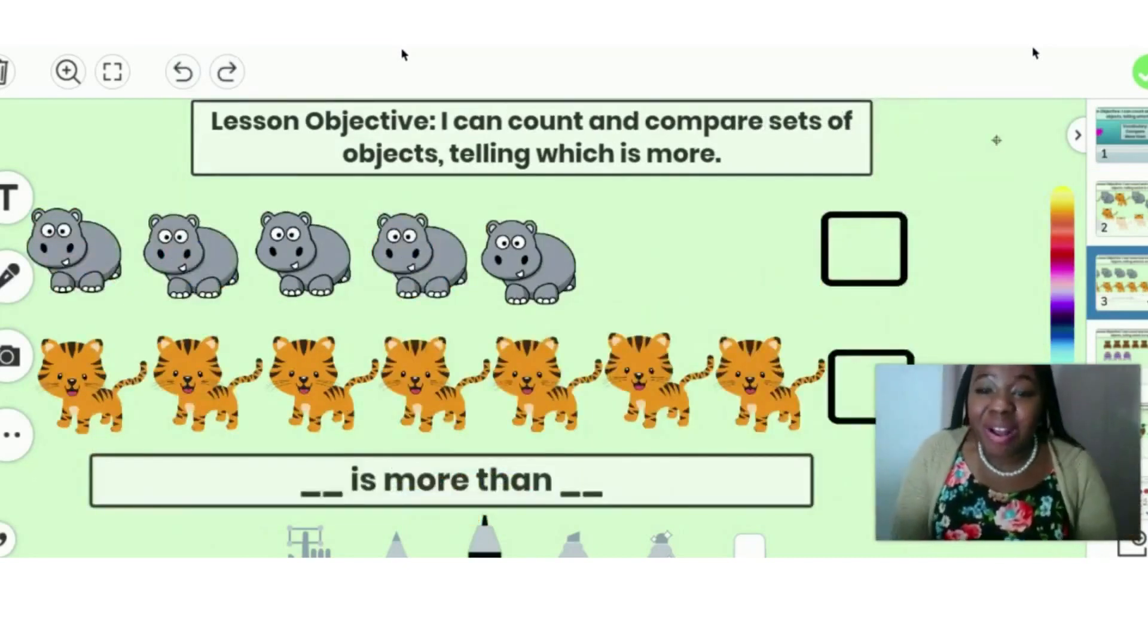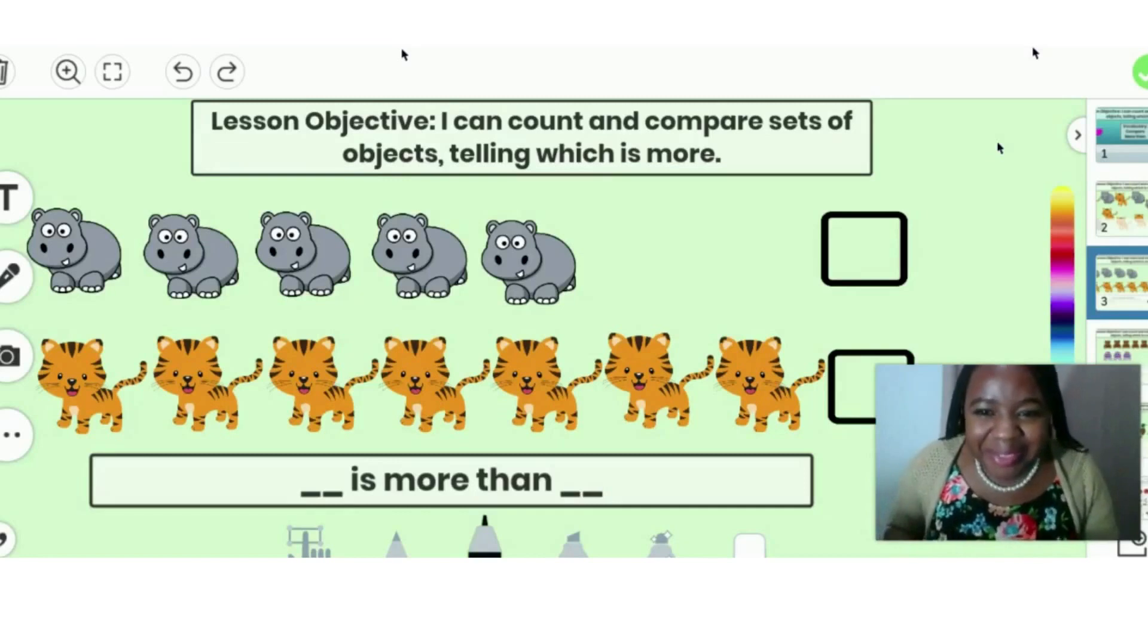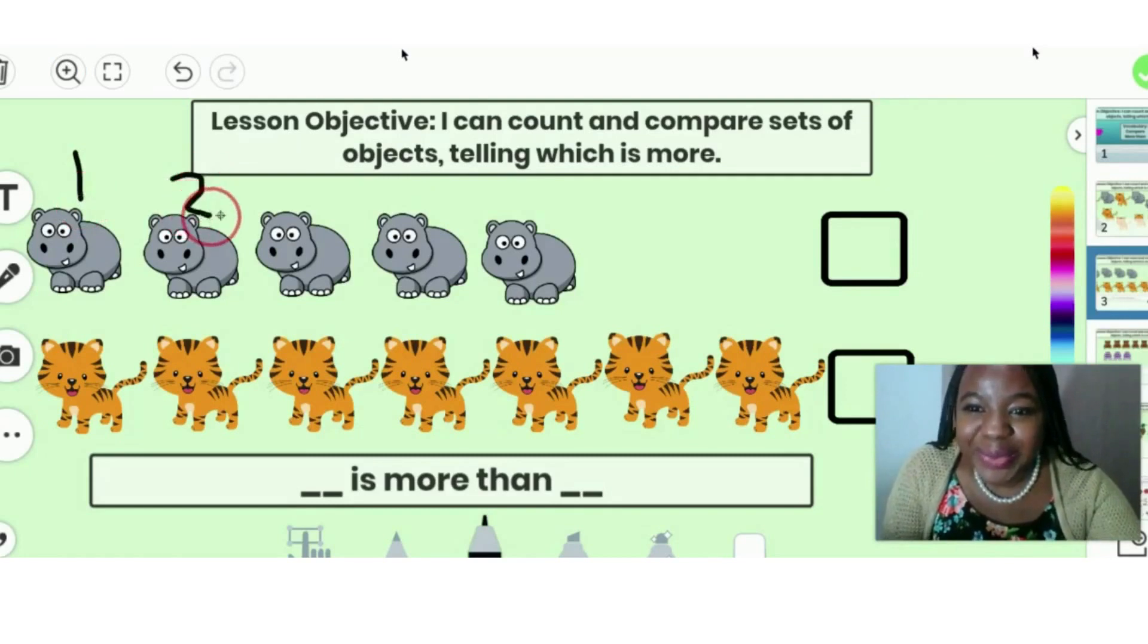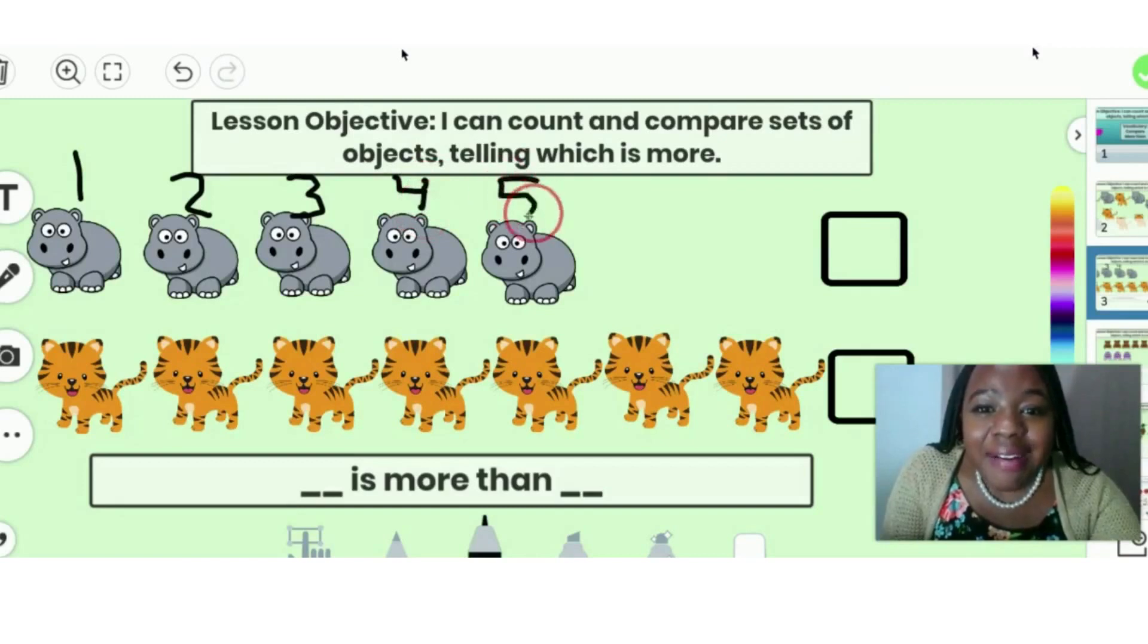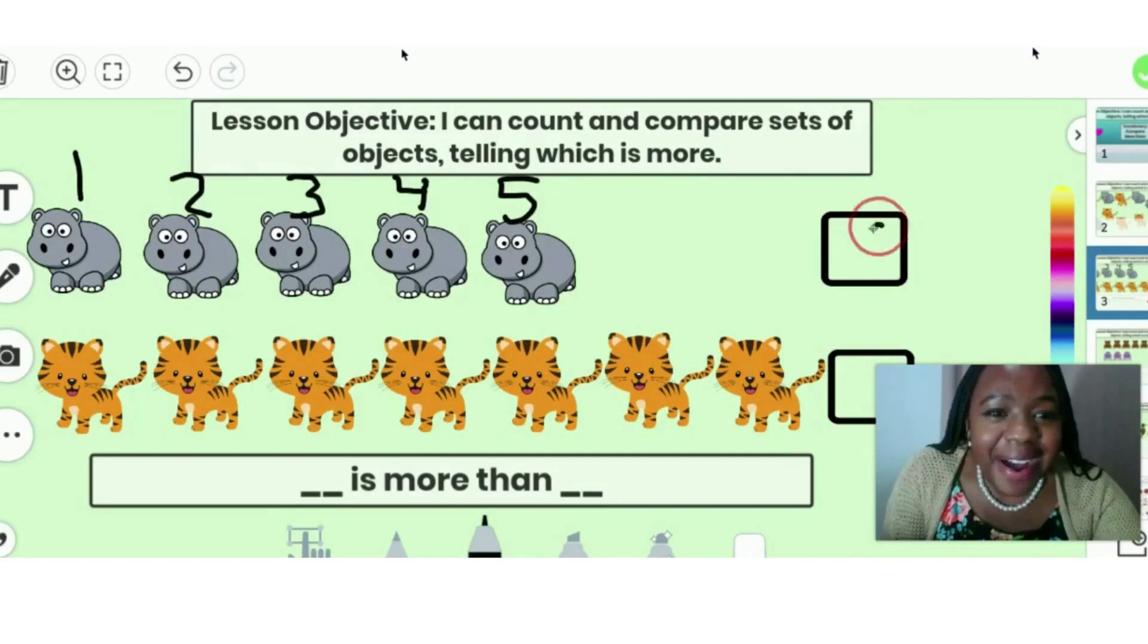Look at that! They're all in a straight line. That makes it easy for us to see how many we have. So now we can count it. Count along with me, friends. One, two, three, four, five. Five hippos! And we're going to write the number five in the box.